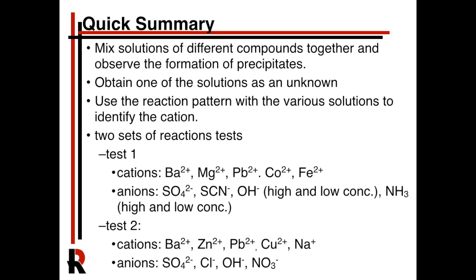You'll do this with two different sets of cations and anions, and you'll also have an unknown which is one of the cation solutions from each test. You're going to look at the reaction pattern and use that to predict the identity of the unknown.